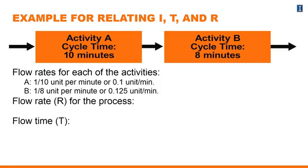The flow rate for the process, as you probably remember, is determined by the activity that has the largest cycle time. The larger of the two is ten minutes, and that will determine the flow rate of the whole process. So the flow rate of the process is going to come from the flow rate of A, which is 0.1 units per minute. The flow time of the process is simply the addition of the times of the two activities: ten plus eight equals eighteen minutes.